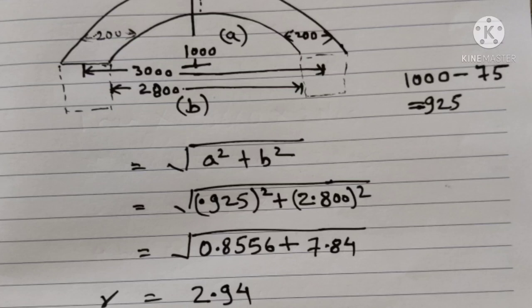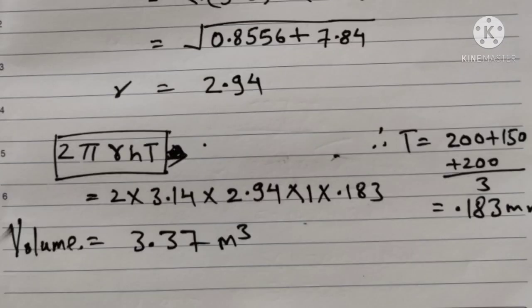Let's calculate it. Volume formula is 2 pi r h into t thickness average, 200 plus 150 plus 200 divided by 3, average thickness. Volume dome same as top dome volume.